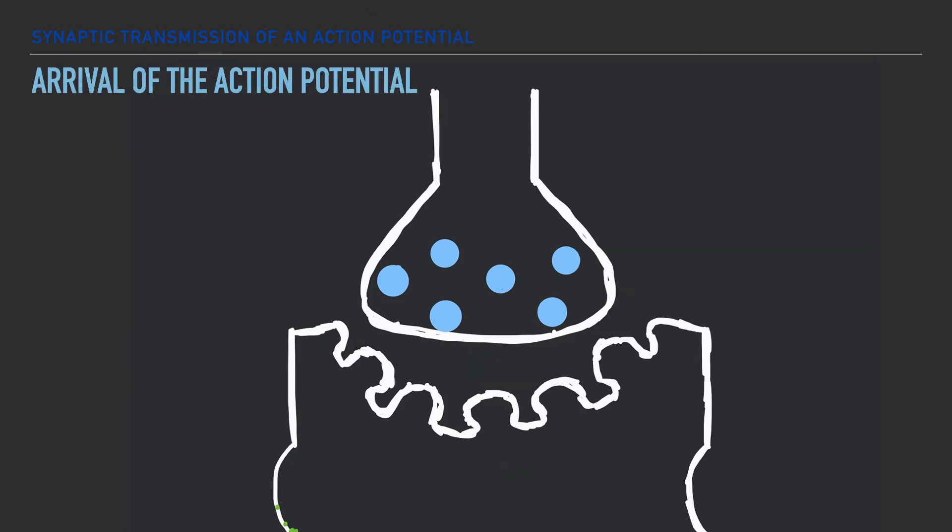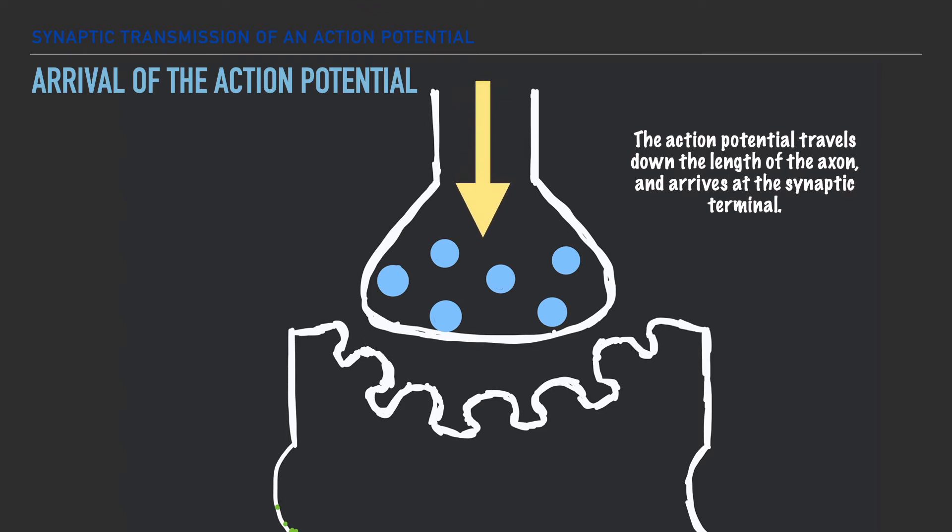First, we start with the action potential traveling down the length of the axon. And as it's doing this, keep in mind that we're continuing to have an exchange of ions along the axon. And what we're showcasing here is the arrival of the action potential to the synaptic terminal.